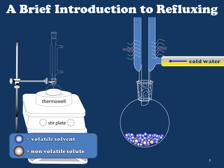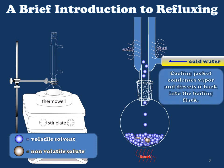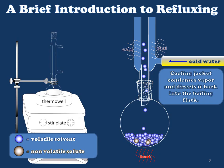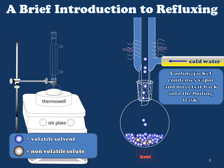As heat is applied to the flask, the solvent begins to boil, but rather than escaping to the atmosphere, when it reaches the cooling jacket it condenses and falls back into the boiling flask. Therefore, the net change in volume of the solvent should be zero. Using this technique, we can boil organic solutions for extremely long periods of time — for hours and sometimes even days — without significant loss of volume. This is the benefit of the refluxing technique.